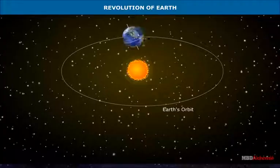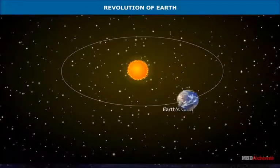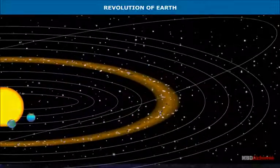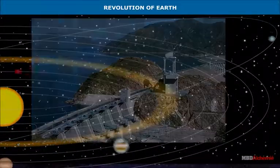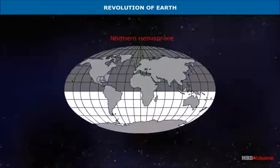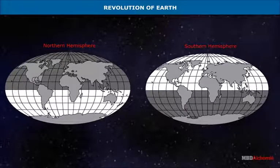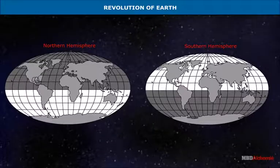While moving around the Sun, the Earth follows a fixed path known as the orbit. The Earth's orbit is elliptical in shape. The two hemispheres of the Earth, the northern hemisphere and the southern hemisphere, remain inclined towards the Sun during one half of the year.